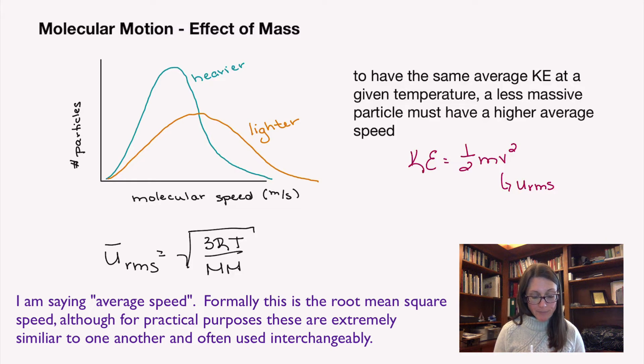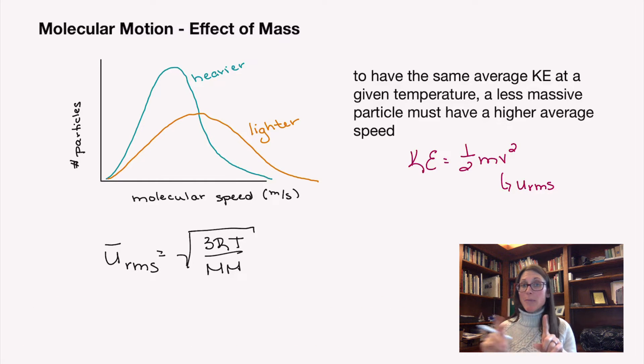So what we see is that heavier molecules have a lower average speed, same kinetic energy, same average kinetic energy, but a lower average speed because it takes less speed to get to the same kinetic energy. And so lighter particles will move faster at the particular temperature and heavier particles will move slower at a particular temperature.